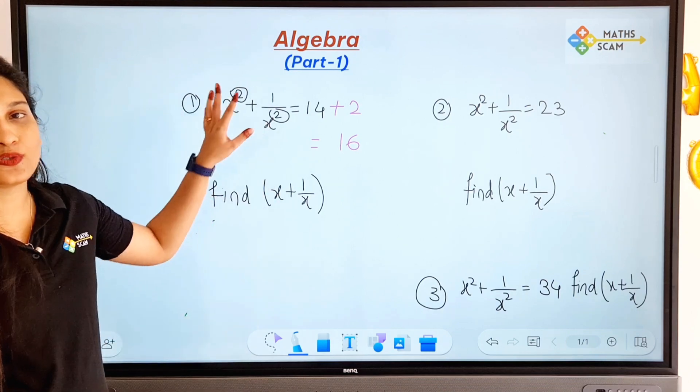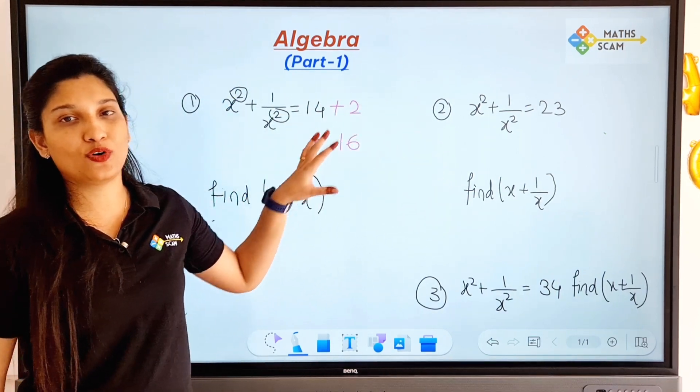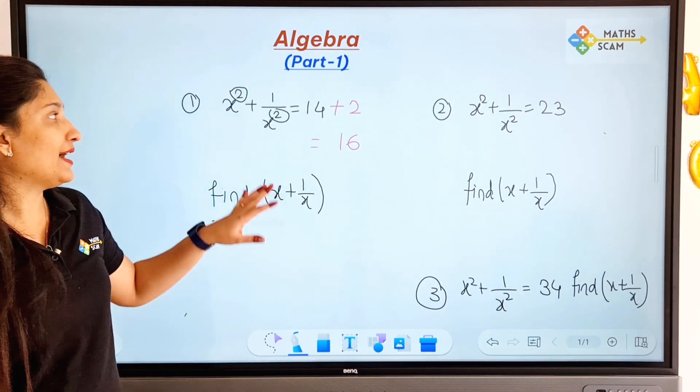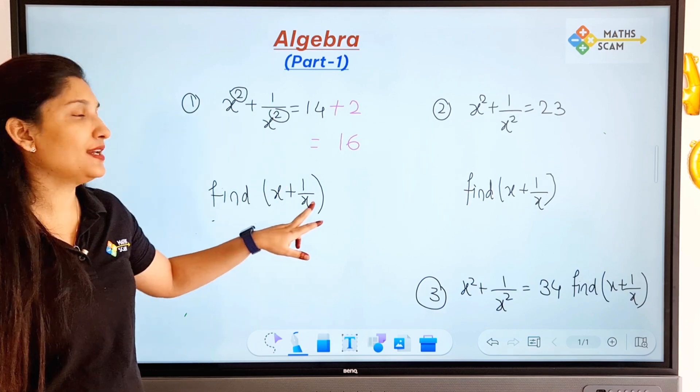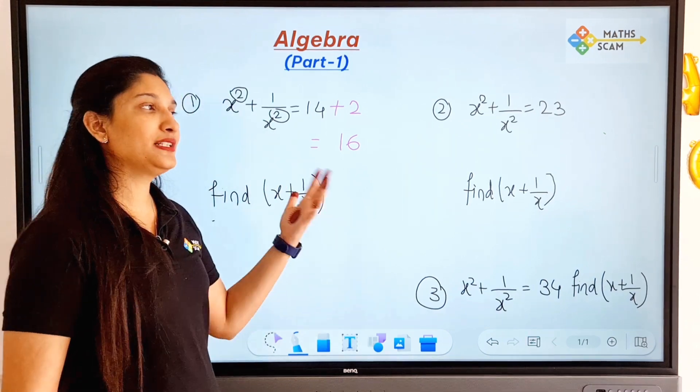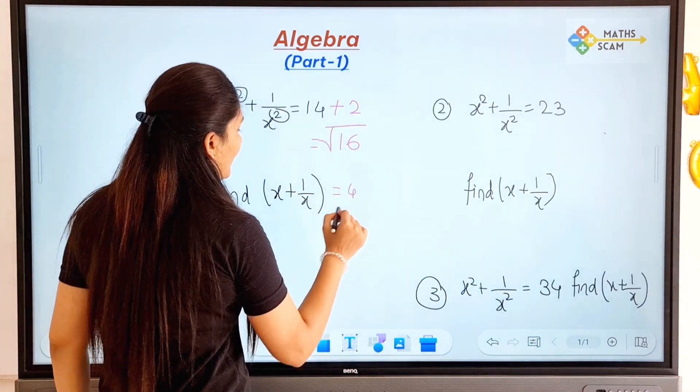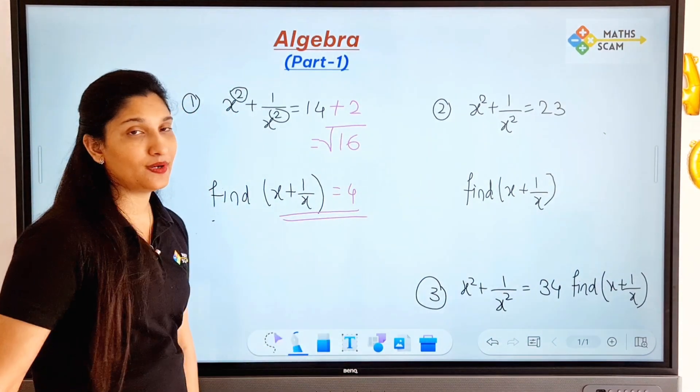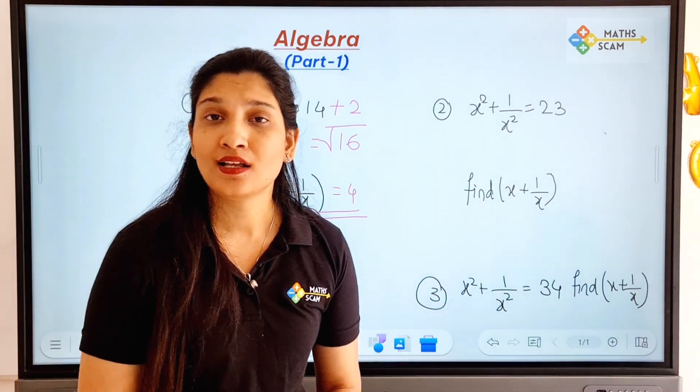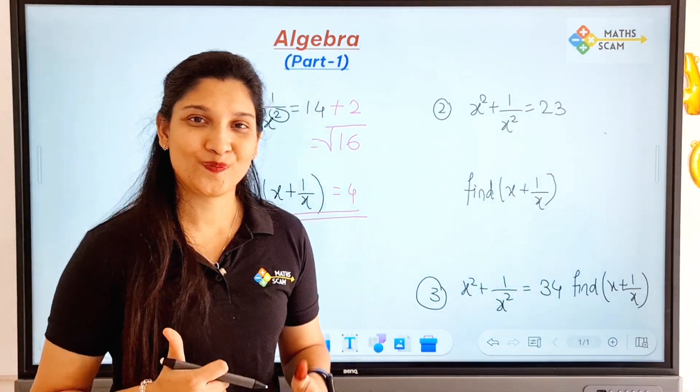What we did is, here we have square, so 14 plus 2 is 16 we got. Now here we have square, here we have without square, right. So let's find the square root. Square root of 16 is equal to 4 and that is the value of x + 1/x. Simple, very good.